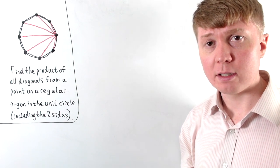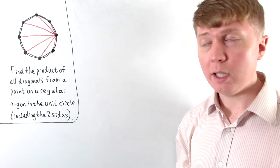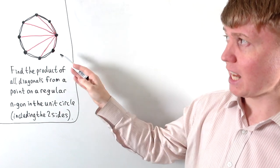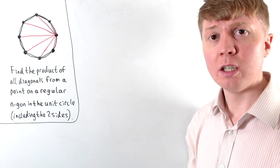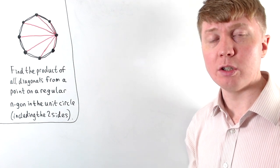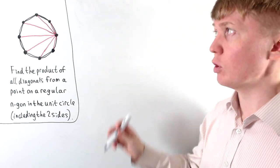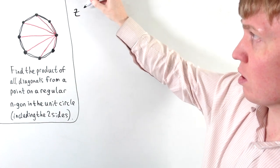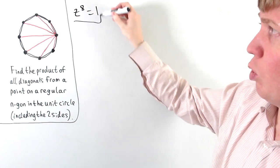And we're going to do this using complex numbers. So we're going to draw on the fact that, for example, here we've got n is 8, so we've got a regular octagon inscribed in the unit circle, and these correspond to our 8th roots of unity. So these would be solutions to the equation z to the power of 8 equals 1.